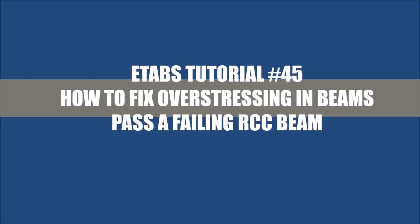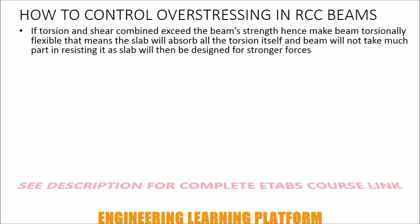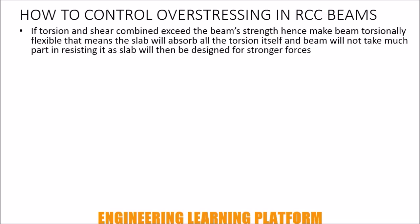In this video you will learn how to fix over stress in beams, or in simple words pass a failing RCC beam. There are a few tips on how to control over stressing in the beam. If shear and torsion combined exceed the beam strength, make the beam torsionally flexible so that the slab will absorb all the torsion itself and the beam will not take much part in resisting.